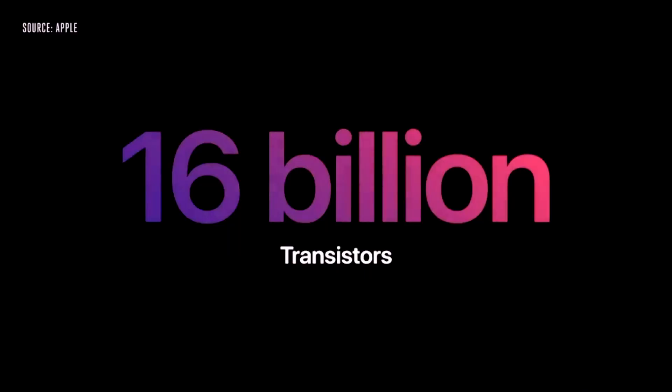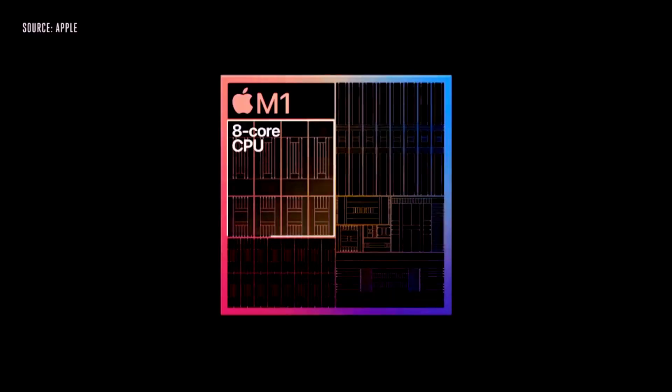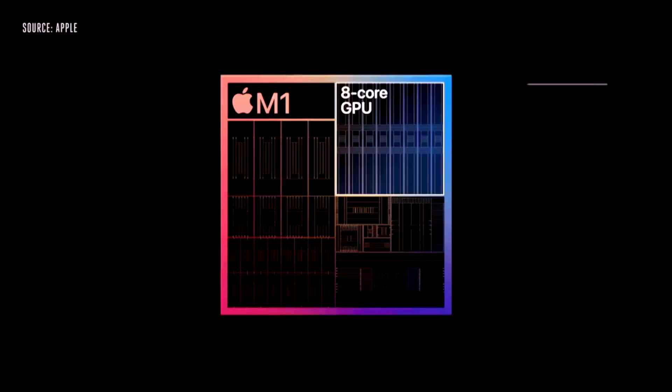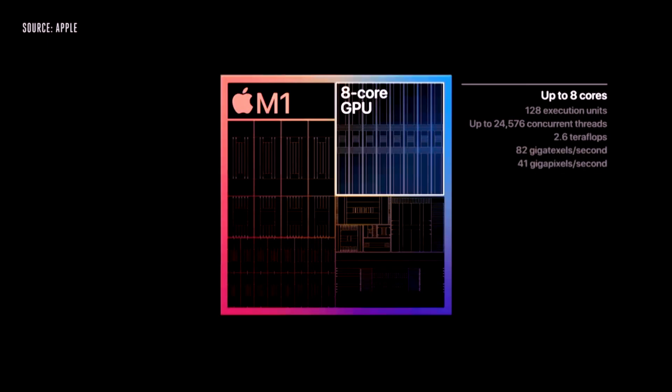M1 is the first personal computer chip built using the industry-leading 5-nanometer process technology. With up to 8 GPU cores, M1 is capable of executing nearly 25,000 threads at a time.